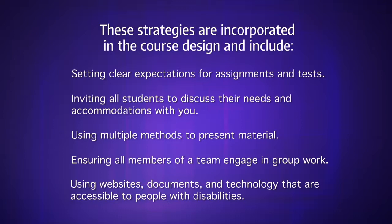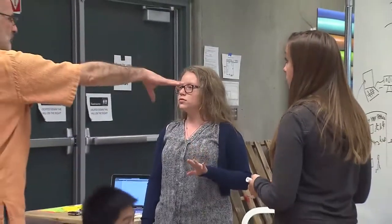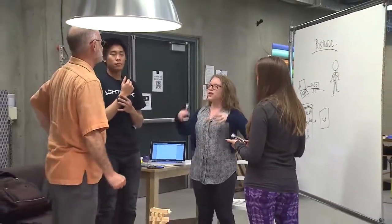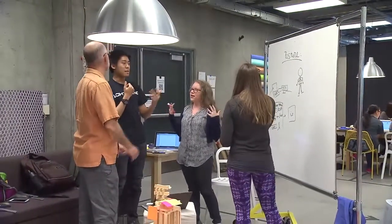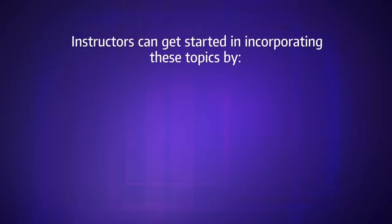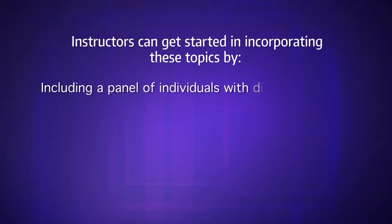Engineering faculty can also teach accessibility and universal design in their courses. By including accessibility and universal design in engineering curriculum, you're making a statement to all students that the perspectives and needs of people with disabilities is something they need to think about — whether they're engineering specifically for that group or for any other group. Instructors can get started by including a panel of individuals with diverse abilities.